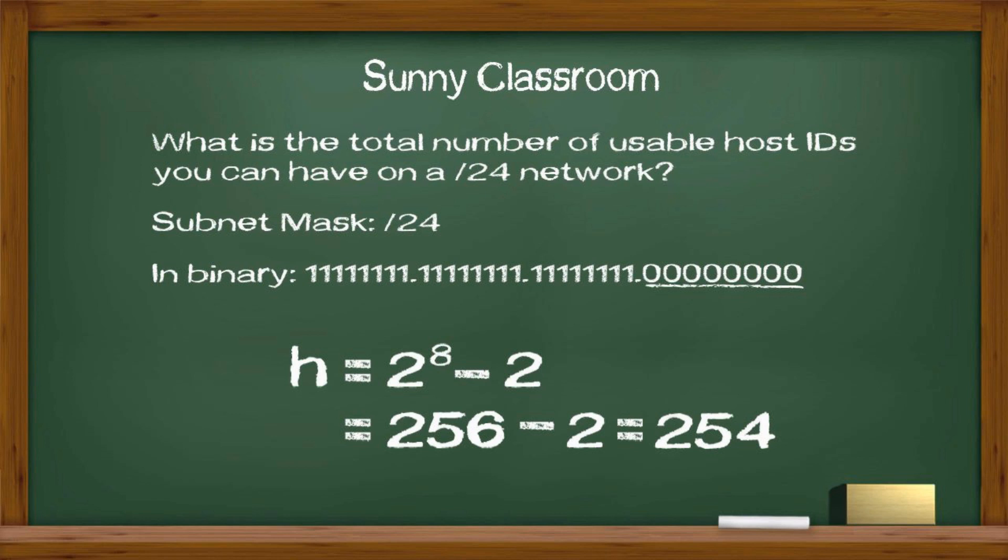It is just like every city has a zip code. And the last ID is reserved for the network broadcast ID. Broadcast ID is used by any host on a certain network to broadcast. That's why we must subtract 2 from 256. Any ID between network ID and broadcast ID can be assigned to a host on a network.